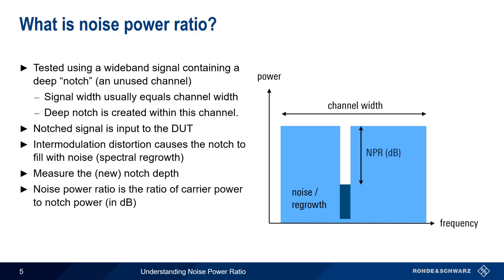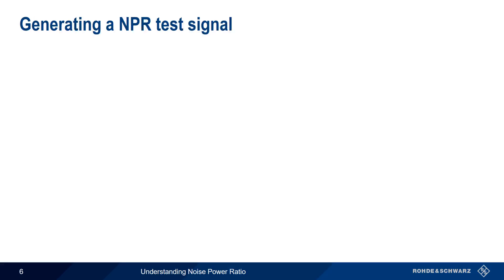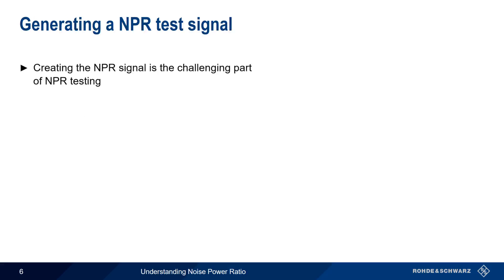Noise Power Ratio is the ratio, in dB, of the carrier power to the notch power. A higher noise power ratio, or less noise in the notch, means lower intermodulation distortion. Note that the size, location, and number of notches are chosen based on a given DUT or application, and NPR tests are often repeated with different notch sizes, locations, and power levels. Measuring the depth of the notch is relatively easy, so the real challenge in noise power ratio testing is the creation of the test signal.